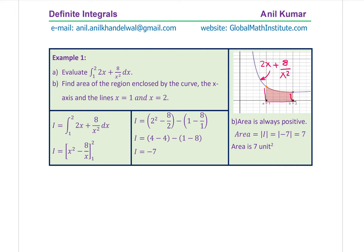To find the definite integral, we utilize the properties learned earlier — antiderivatives and the power rules. Writing I for the integral, it is evaluated from x equals 1 to 2 for the function 2x plus 8 over x squared. For the first term, x squared over 2 — the 2s cancel, giving x squared. For the second term, 8 over x squared is x to the power of minus 2; adding 1 gives minus 1, divided by minus 1, making the sign negative, giving minus 8 over x.